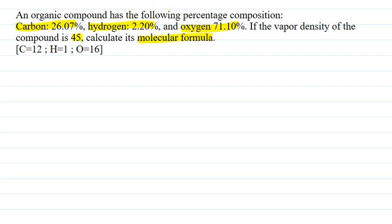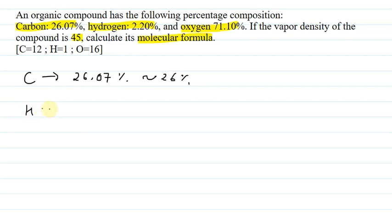So in the question we have been given a compound with its percentage composition, and we have also been given the vapor density. The given information is: carbon 26.07%, which is nearly equal to 26%, and hydrogen 2.20%, which is nearly equal to 2%.